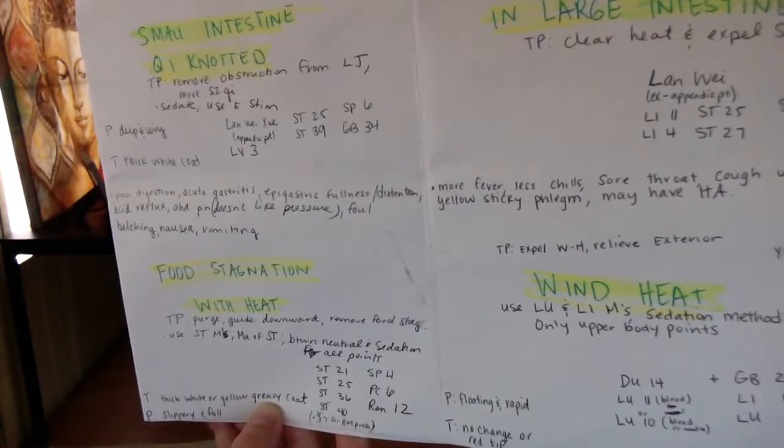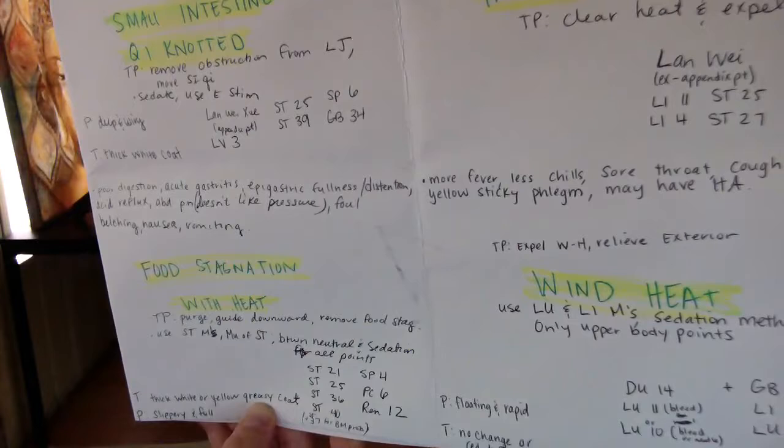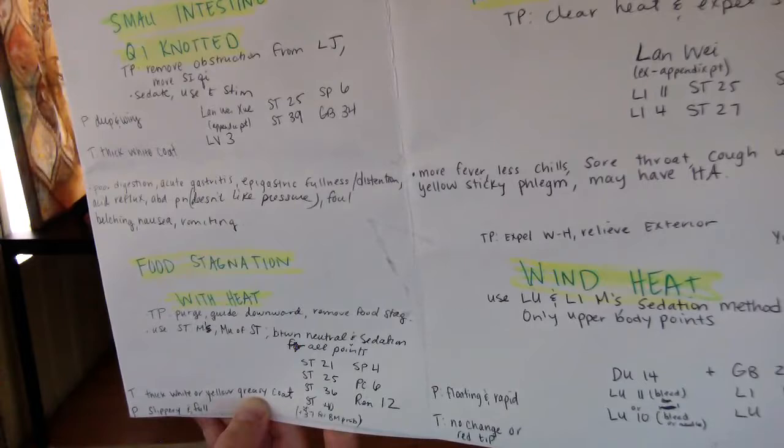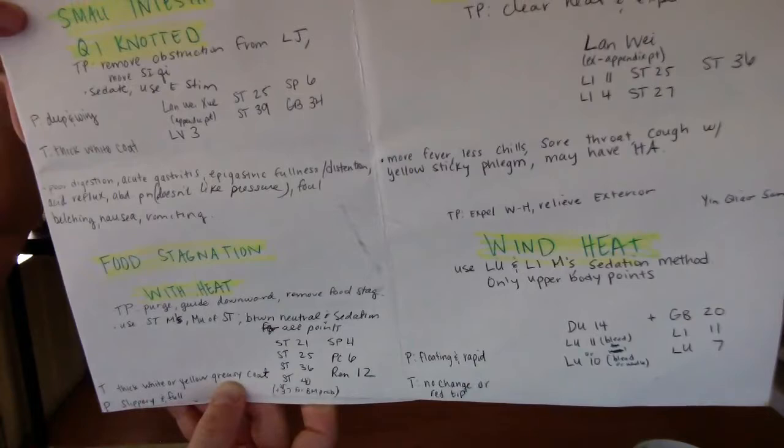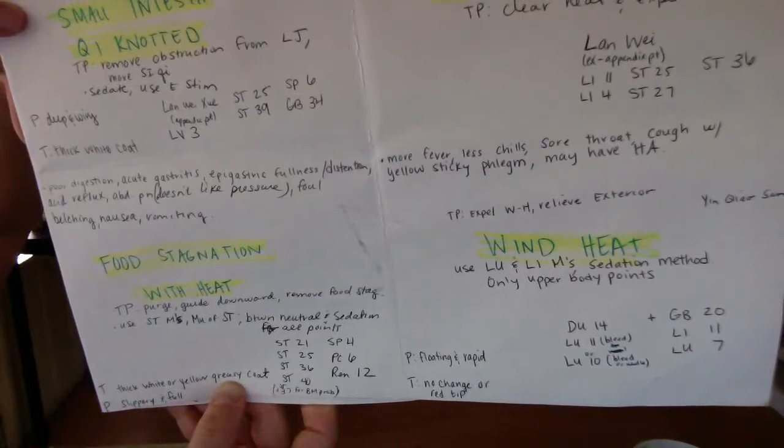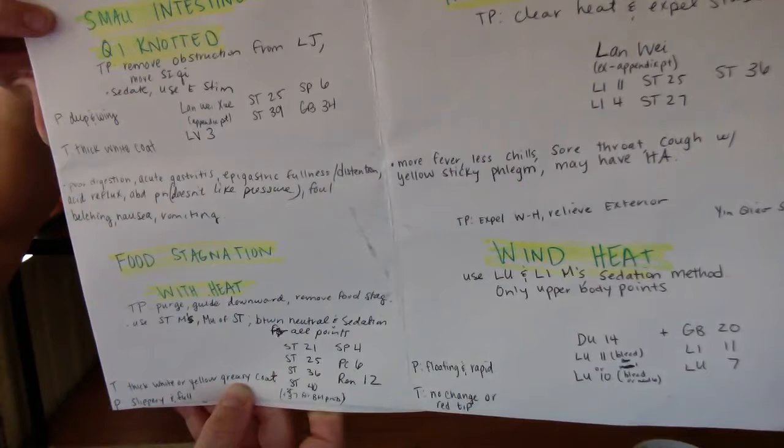Food stagnation with heat: the tongue is thick white or yellow greasy coat. The pulse is slippery and full. Treatment principle is to purge, guide downward, and remove food stagnation. We use the stomach meridians, the moo of stomach, and use between neutral and sedation method for all points.